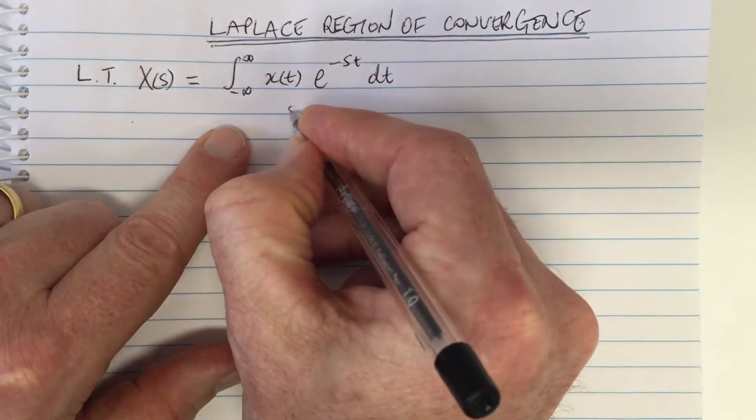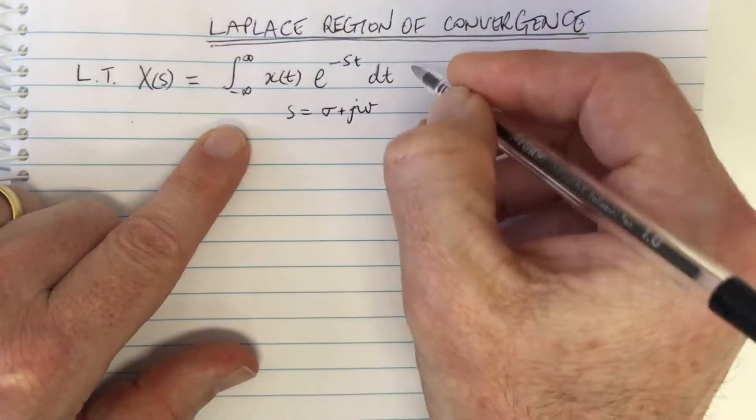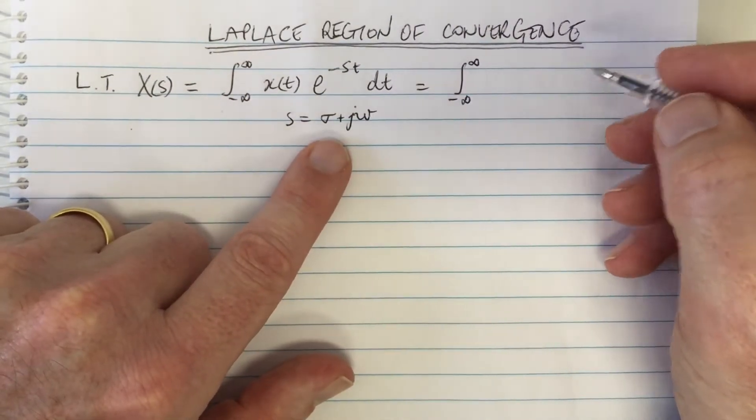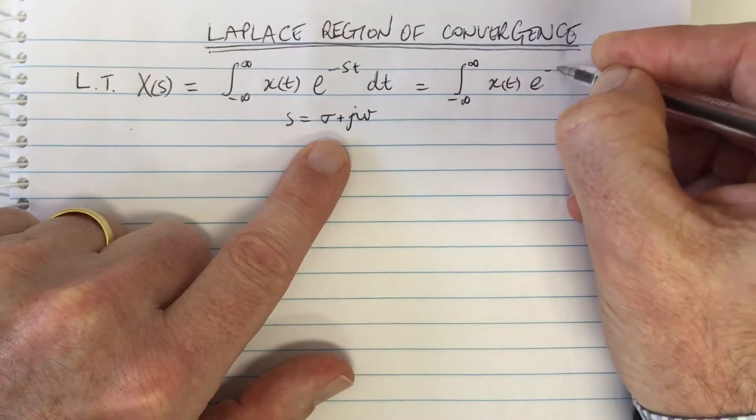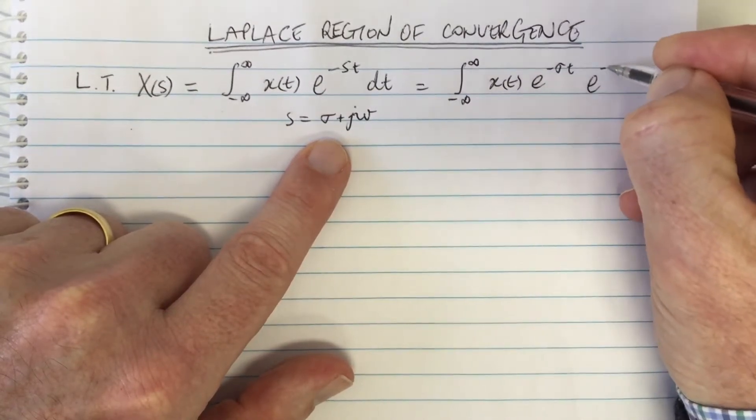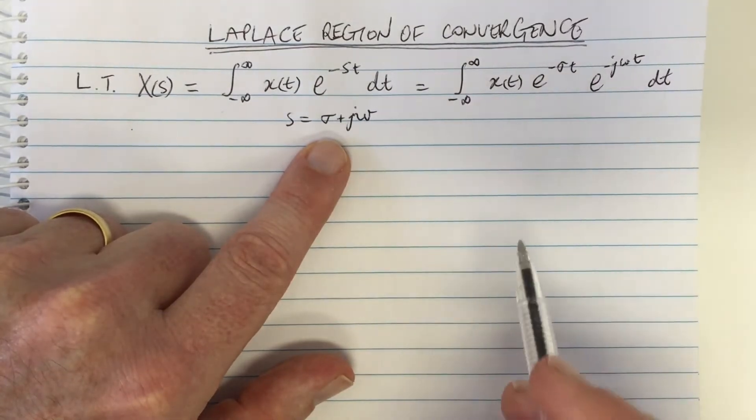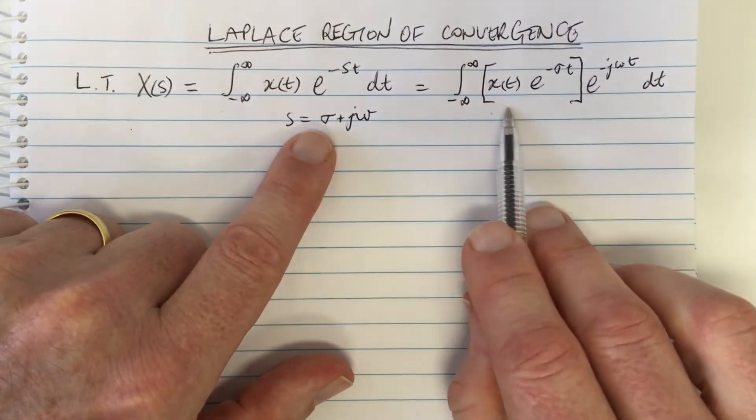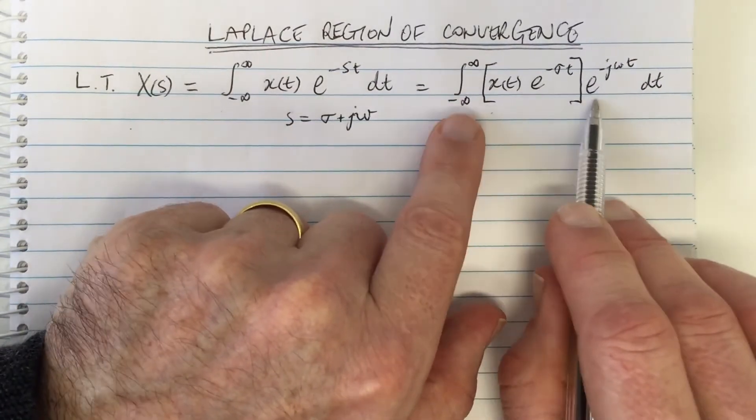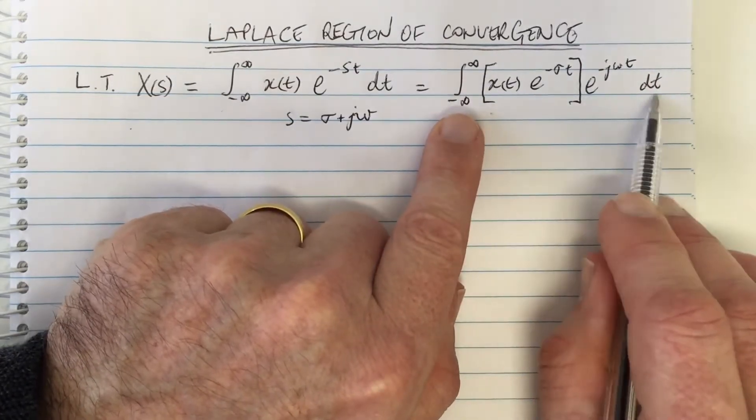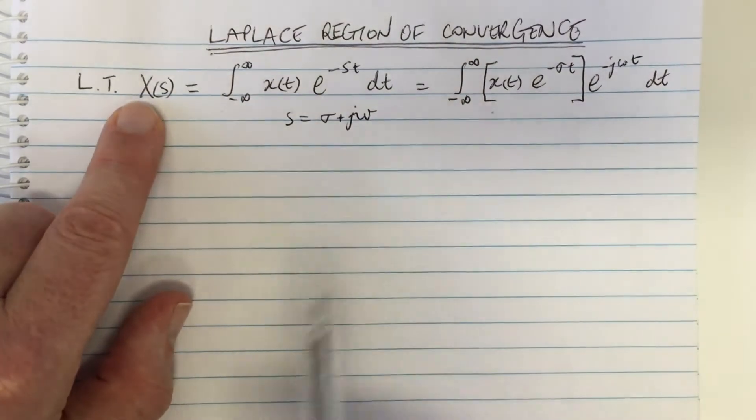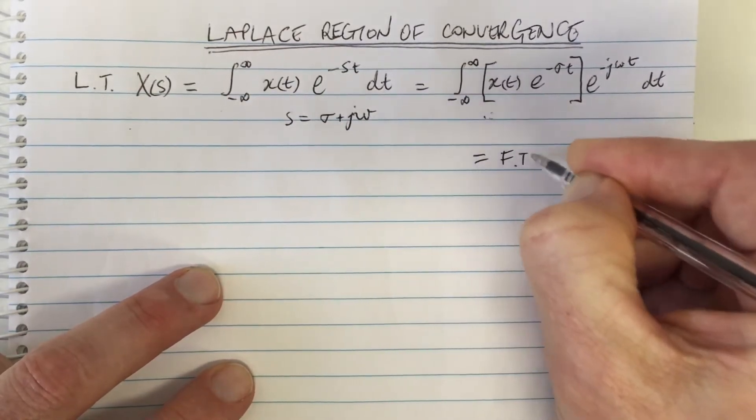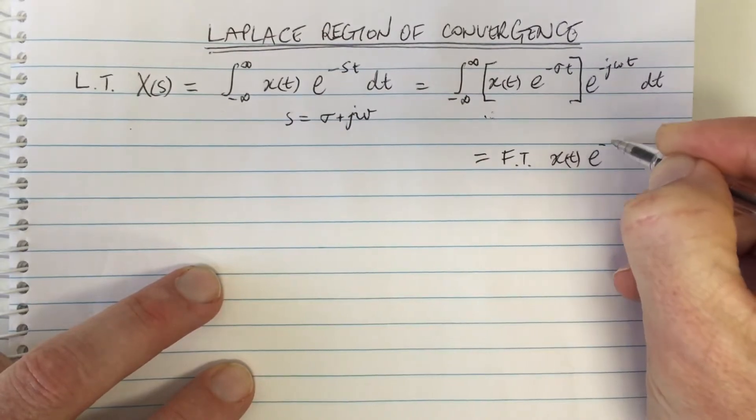So remember that s equals sigma plus j omega and so let's put that into the equation here and see that we get an integral for the formula of the Laplace transform that equals x(t) e to the minus sigma t times e to the minus j omega t dt just simply by substituting in for s. And then if we put brackets around here we can see that this element here is part of, if this is the function, this is inside a Fourier transform.